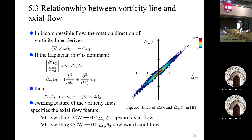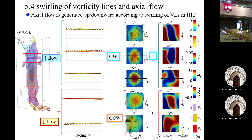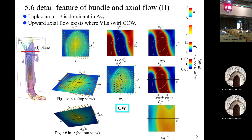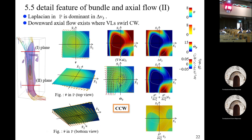If a vorticity line swirls clockwise, the Laplacian of the normal component in the swirl plane is positive, giving an upward axial flow. If the vorticity line swirls counterclockwise, the normal component has downward axial flow. This figure shows vortical flow in several planes, the vorticity vector, and the Laplacian of the normal or rotational component of the vorticity lines — clearly showing that if it rotates clockwise, it has upward axial flow, and if counterclockwise, downward axial flow.